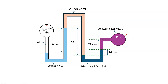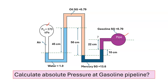On the left-hand side, due to the air pressure, the manometric liquid water is pushed down, and in the other limb, water rises up. After that, oil is present — oil is pushed up, and in the other column it is pushed down. Above the mercury, gasoline is there. We have to calculate the absolute pressure at the gasoline pipeline, that is P_gasoline absolute.